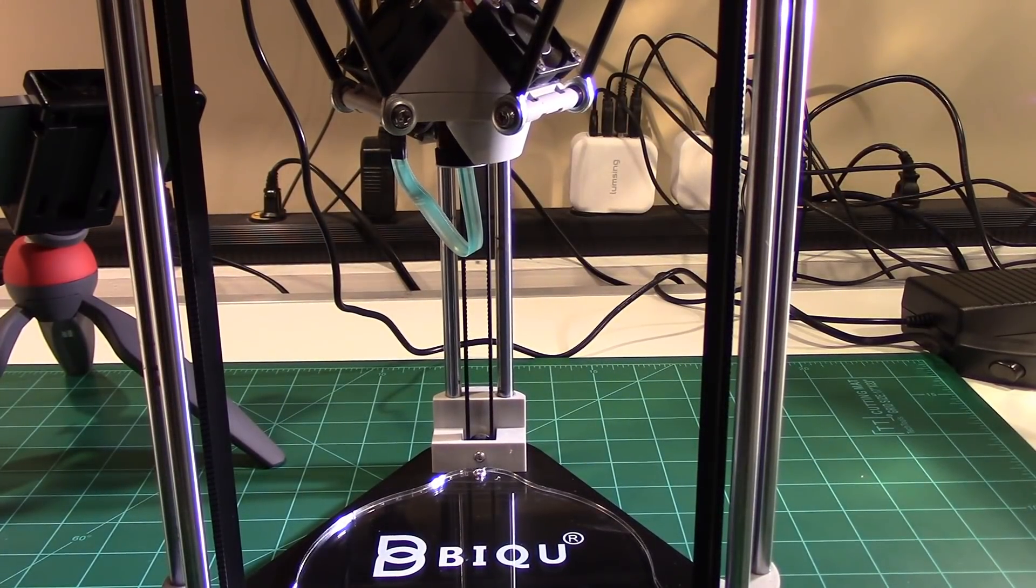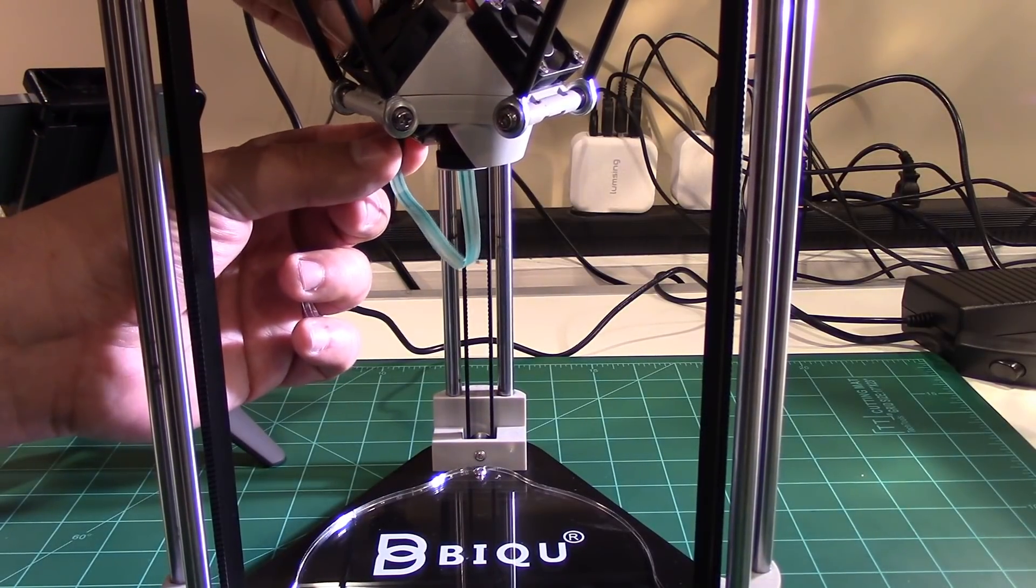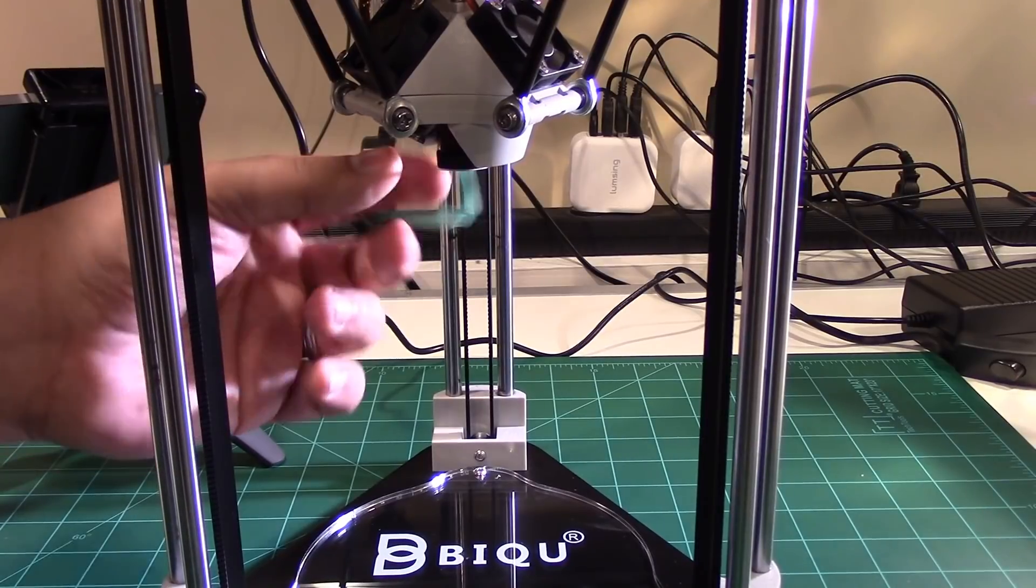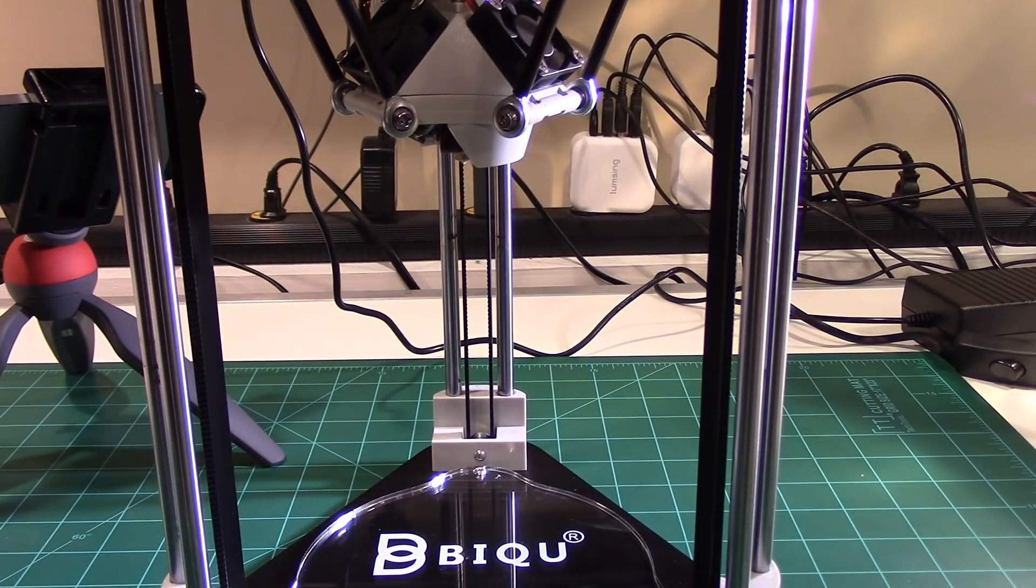So what we're now going to do is I'm going to turn the power off and I'm going to remove the unit and pop it off. Now we should be actually good to go print.